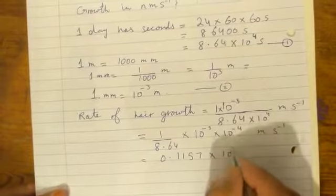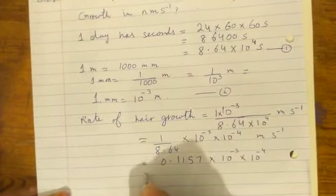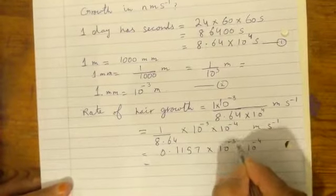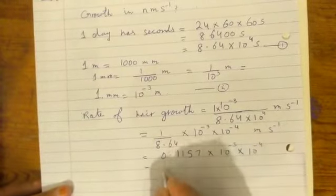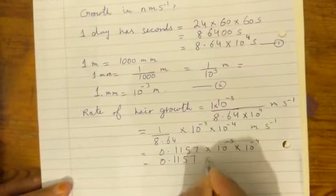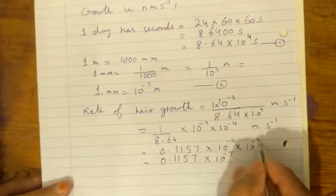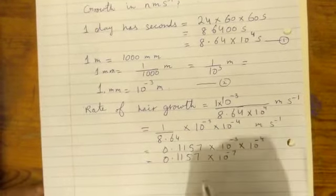We have two powers: minus three times ten to the power minus four. When we multiply, we add the powers. So our answer is 0.1157 times ten to the power minus seven. When we add powers, the sign is always from the larger number.